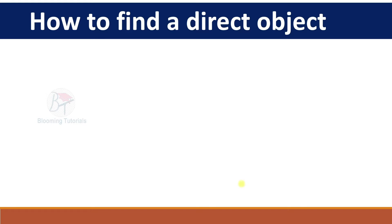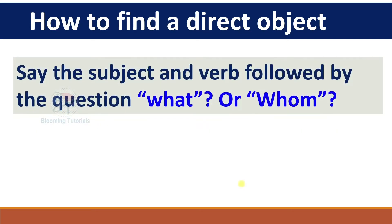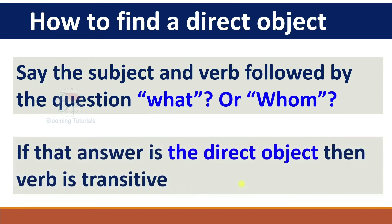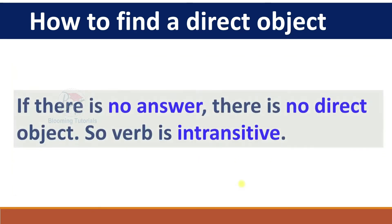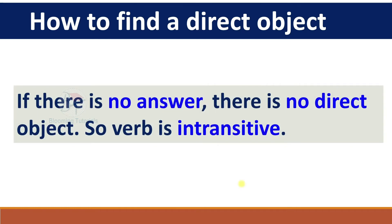How to find a direct object? Sometimes we don't know what question it has to answer. Look at the subject and verb, then ask the question 'what?' or 'whom?'. If the verb is transitive, it will answer that question. If there is an answer, that answer is the direct object and the verb is transitive. If there is no answer, there is no direct object, so the verb is intransitive.